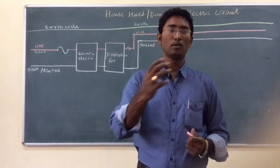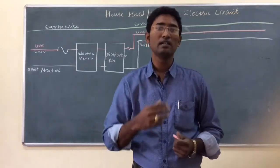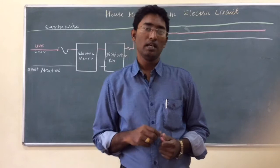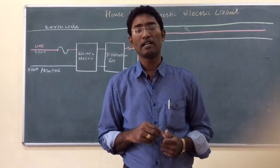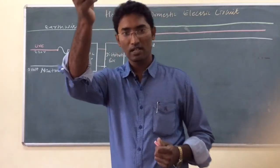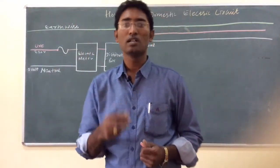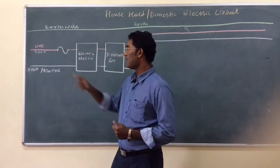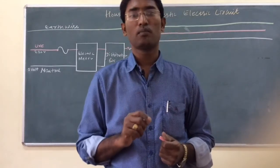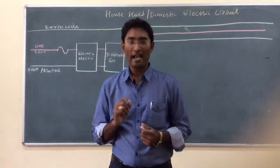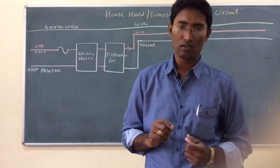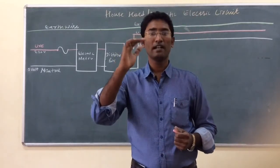We get electricity at home using overhead wires or underground cables. The electricity at home has a potential difference of 220 volts. The two wires connected to the pole and carried into the house are of two types: the live wire and the neutral wire. The live wire has red insulation and a potential difference of 220 volts, while the neutral wire has a potential difference of 0 volts and is covered with black insulation.